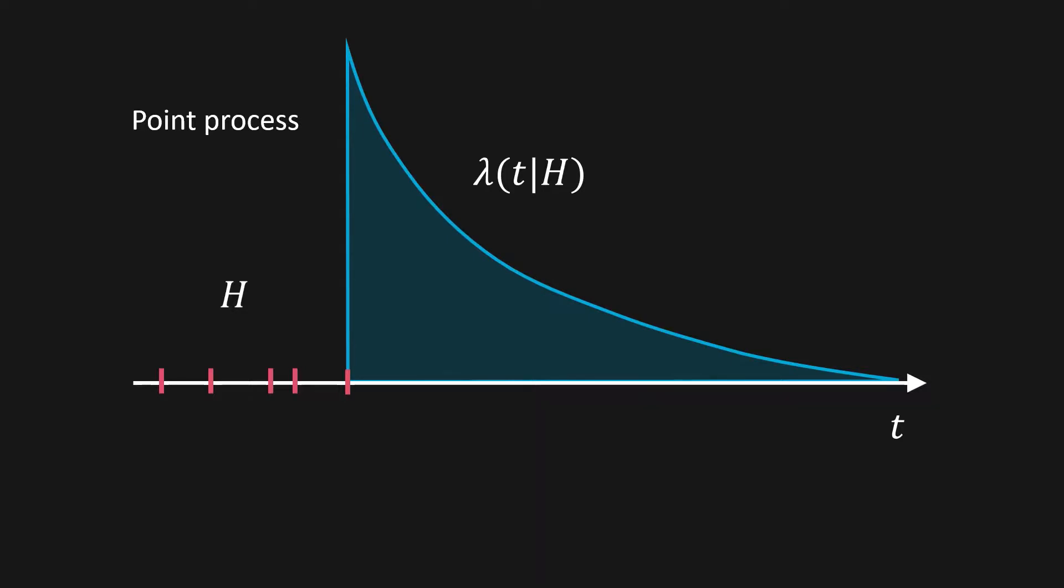If we know where the next point landed the likelihood can be calculated with this formula. It depends on the intensity in this point and the area under the curve. We want to maximize this probability.